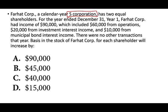Farhat Corp., a calendar year S corporation, has two equal shareholders — 50-50. For the year end of December 31st, year 1, Farhat had income of $90,000, which included $60,000 from operating the business, $20,000 from investment interest income, and $10,000 from municipal bond interest. There are no other transactions for that year. Basis in the stock of Farhat for each shareholder will increase by how much? Remember, it's 50-50 because they own the S Corporation equally.